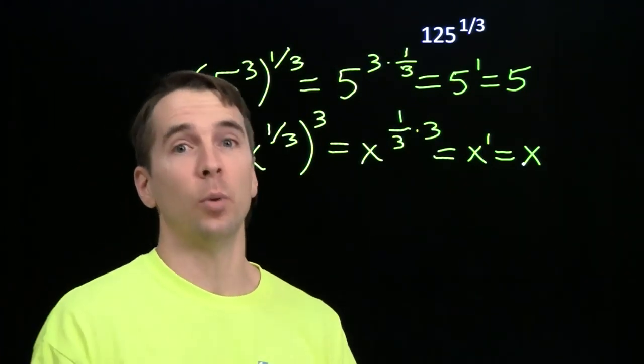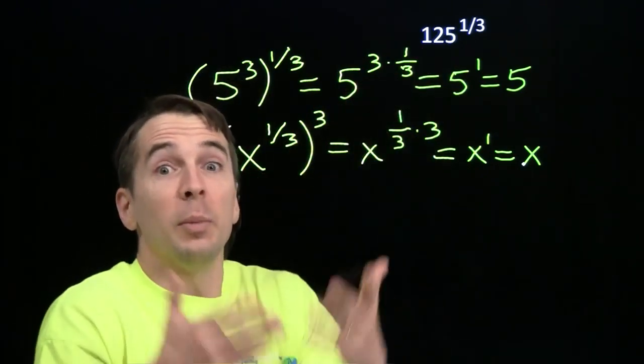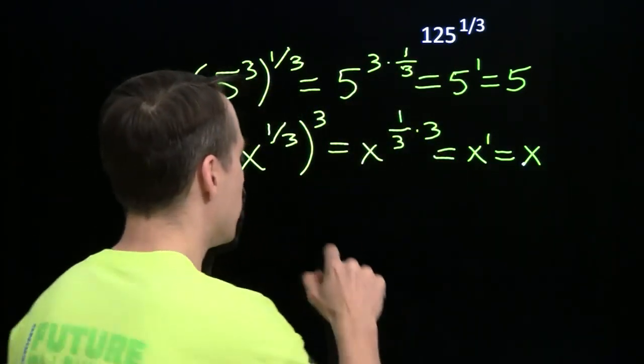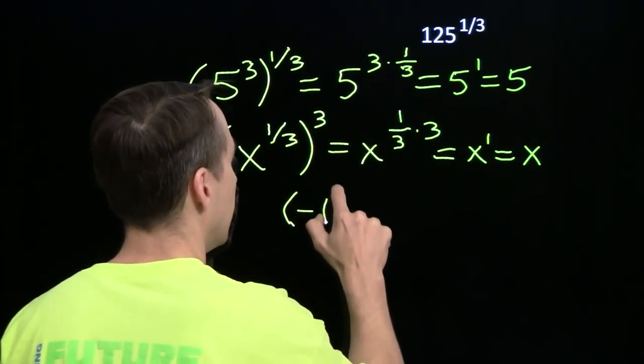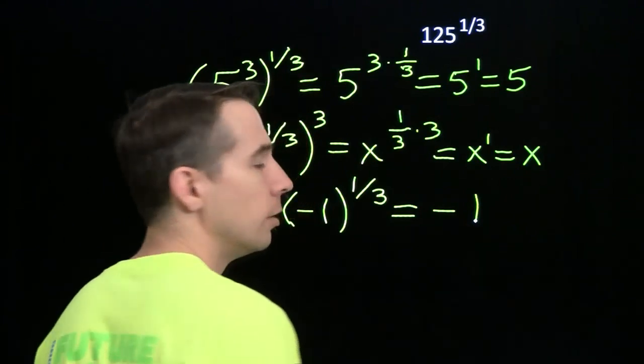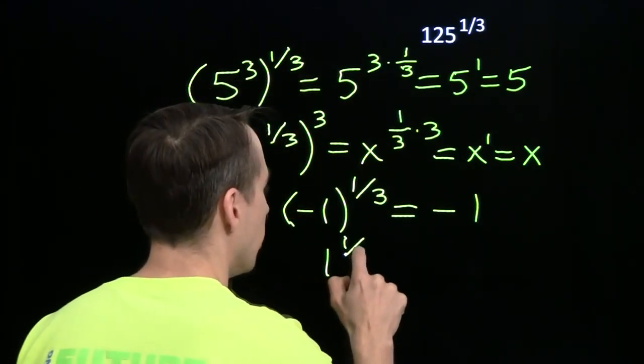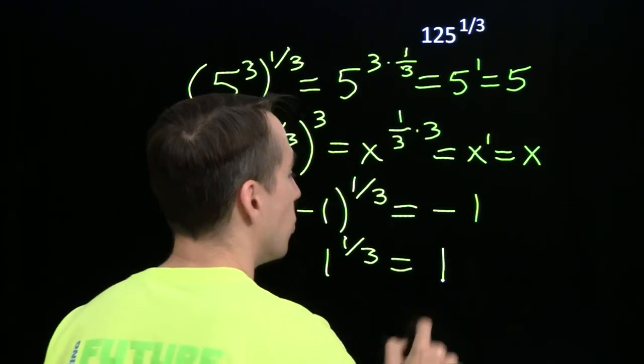Now, notice I didn't have to say non-negative anywhere in there. And that's because we can take negative numbers, cube them and get negative numbers. So if we had something like negative 1 to the 1 third, well, that's just negative 1. Because if you cube negative 1, you get negative 1. Whereas 1 to the 1 third is 1.